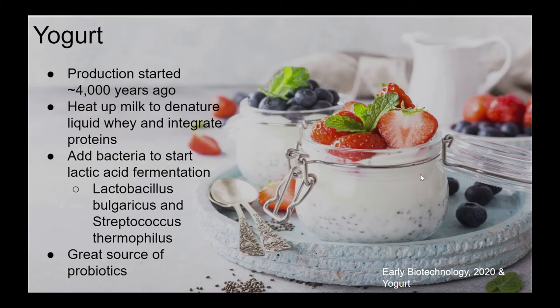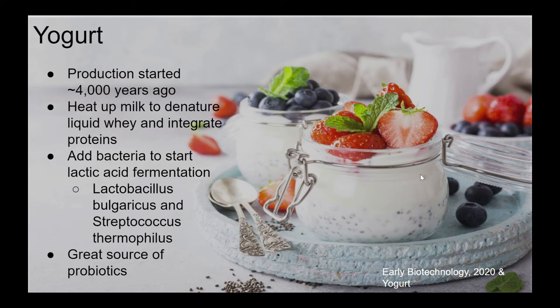Yogurt production is estimated to have started about 4,000 years ago. In yogurt making, the milk is heated, which kills the undesirable bacteria and denatures the liquid whey, causing it to set together rather than forming curds like in cheese production. The mixture is then cooled and bacteria is added. By law, Lactobacillus bulgaricus and Streptococcus thermophilus are required in yogurt. This mixture is then left to ferment where the bacteria cultures convert the lactose into lactic acid, giving that familiar acidic taste. Yogurt is commonly known to be a great source of live probiotics to support a healthy gut. Fun fact: red wine and sourdough bread also have this ability, but with lower traces of live cultures.